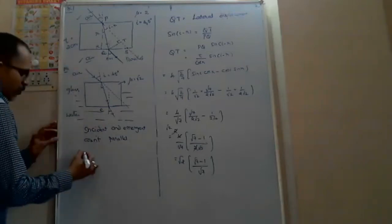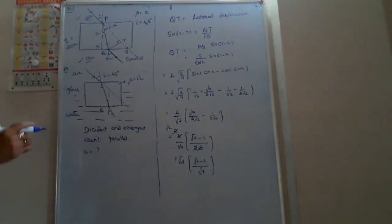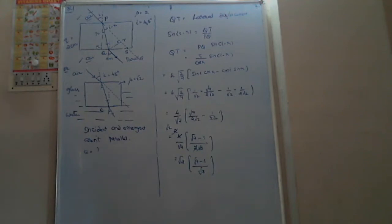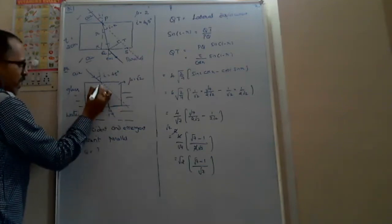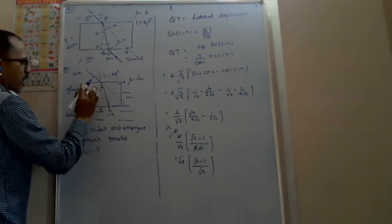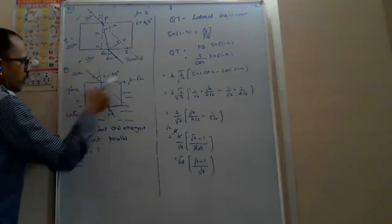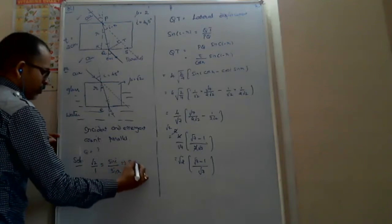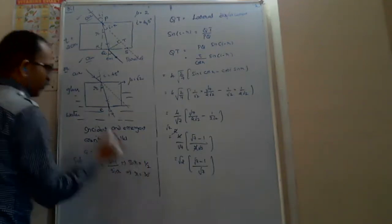We need to find the angle of emergence in this case. First find r at the top surface using Snell's law: mu by 1 equals sine i by sine r, giving sine r equals sine 45 by root 2, so r equals 30 degrees. These two sides of the glass slab are parallel, so by alternating angles the angle inside at the bottom surface is also 30 degrees.